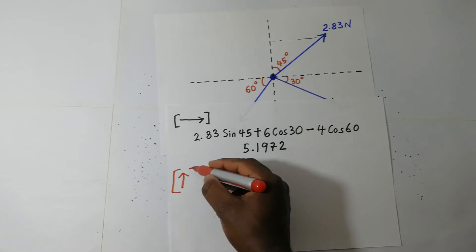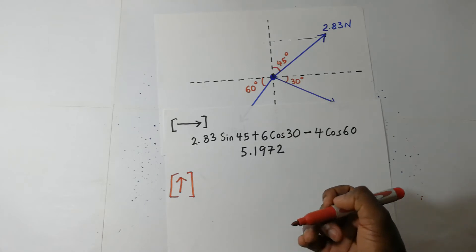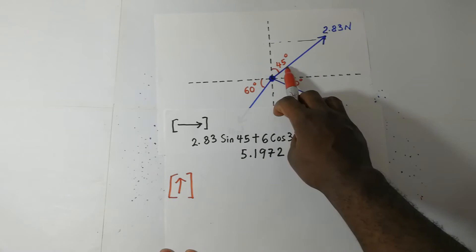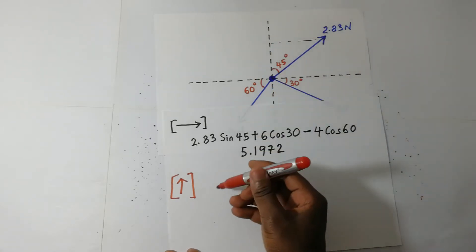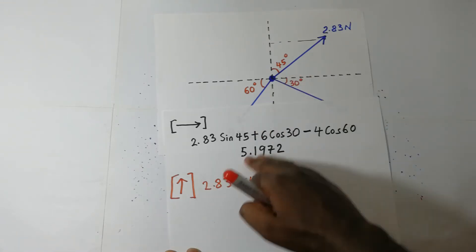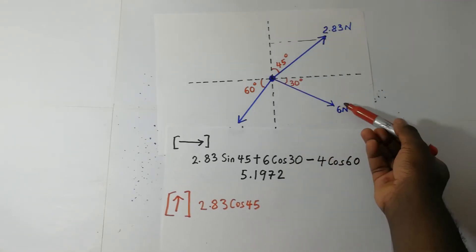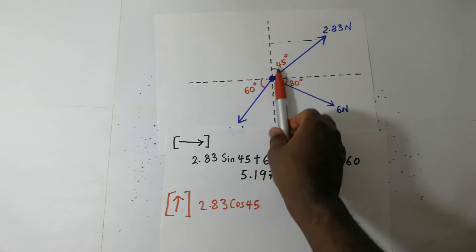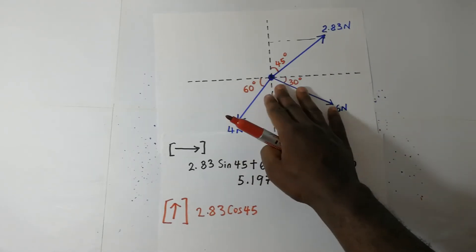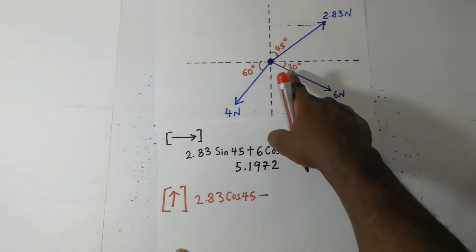I'll use that arrow to show that now what we are calculating is the component of all the forces in the Y axis, and we shall go force by force. Let's begin with the 2.83 Newton force. Resolving this along the Y axis is going to be 2.83 cosine of 45, and this is positive because it's on the positive side of the Y axis. Then we have the 6 Newton force. Resolving it along the Y axis, this is on the negative side of the Y axis, so we shall say minus 6 sine of 30.